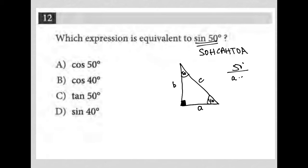Side A is opposite of 50 degrees. With respect to the 50-degree angle, side B is the adjacent side, and side C is the hypotenuse.